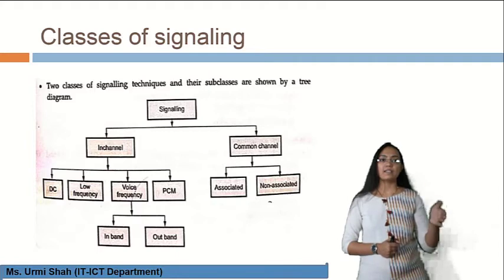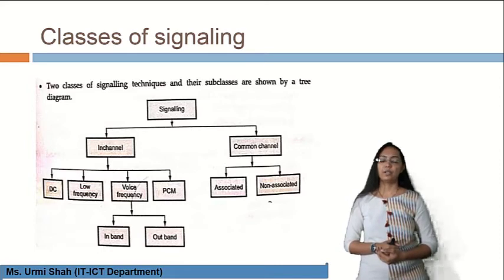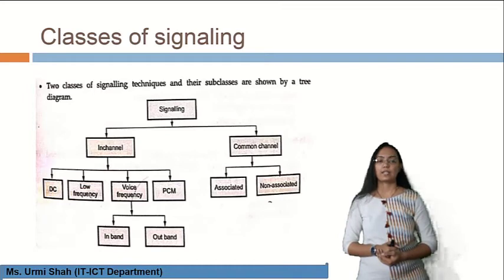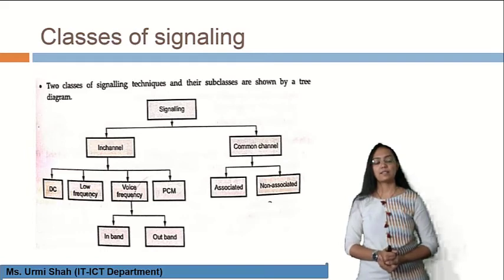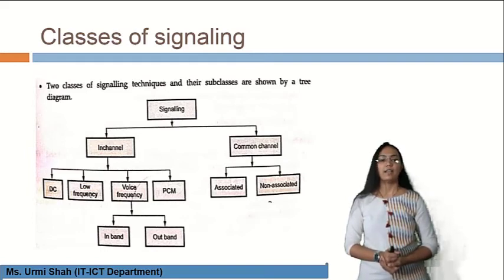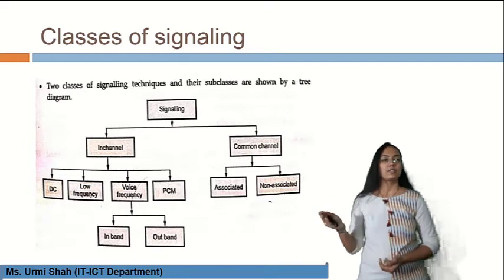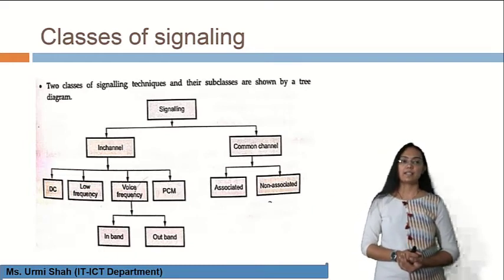In in-channel signaling, there are four types: DC signaling, low frequency signaling, voice frequency signaling, and PCM signaling. Within voice frequency signaling, there is a further bifurcation into two types: in-band signaling and out-band signaling. These are the classifications for the in-channel signaling type.